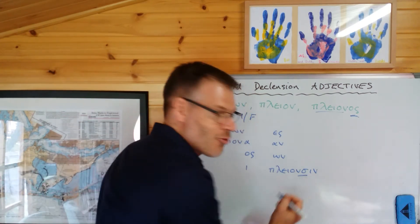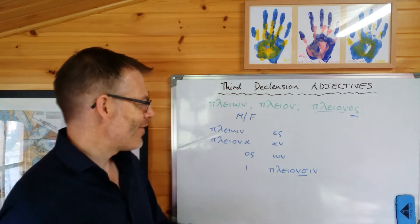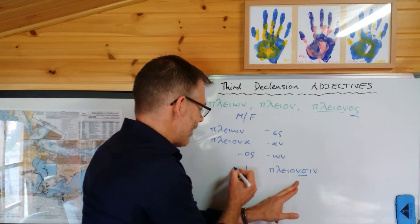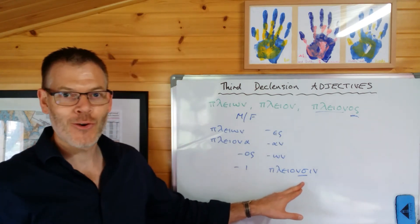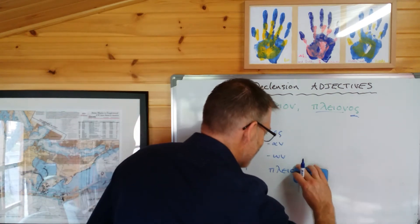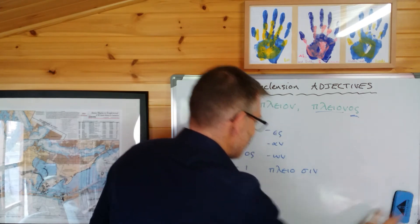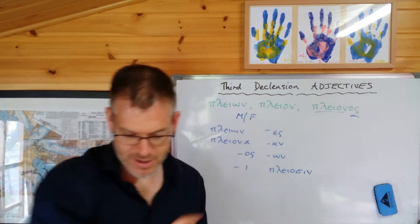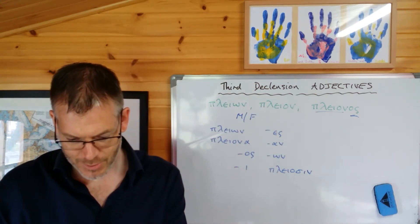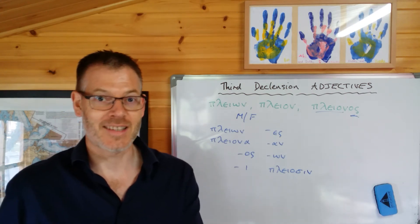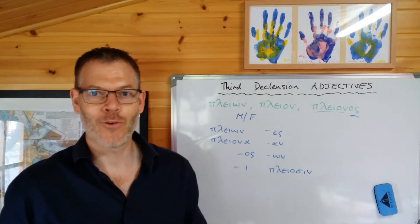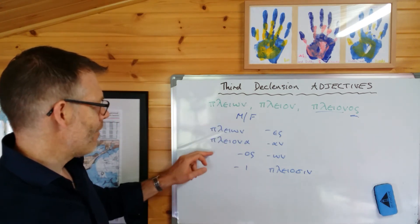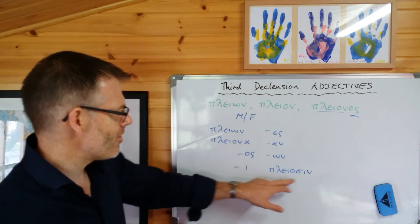You know already that when we have a combination of letters like this in the dative plural form of a third declension noun, what tends to happen is that it becomes play-o-sin. You can find that in Jeremy Duff's book, halfway down on the right on page 136. It's not an irregularity really — it's just a pronunciation thing. That gives you the full masculine and feminine: play-on, play-on-a, play-on-os, play-on-i, play-on-es, play-on-as, play-on-on, play-o-sin, generated from that stem and the nominative masculine/feminine singular form.